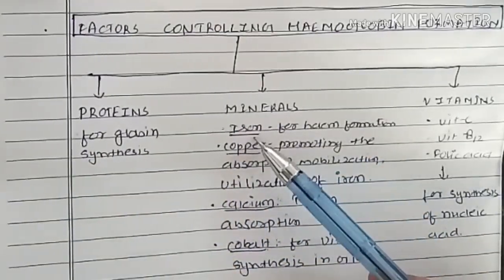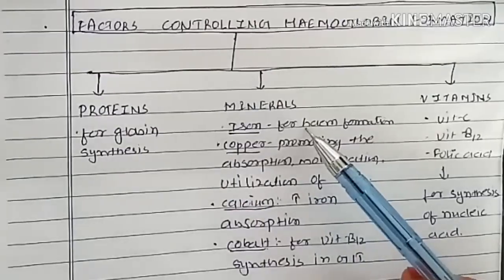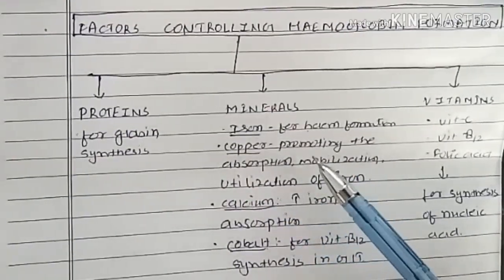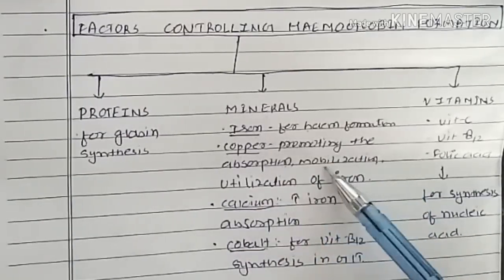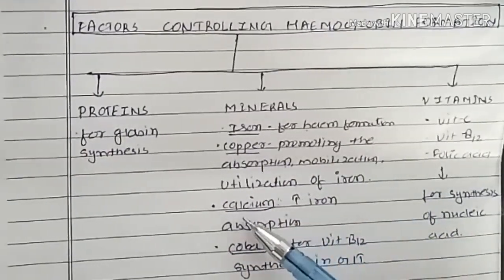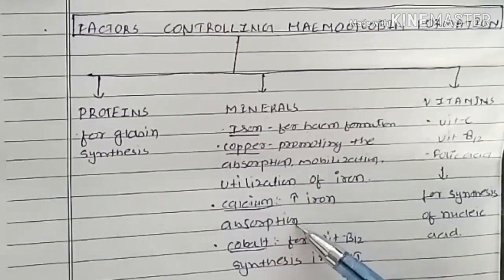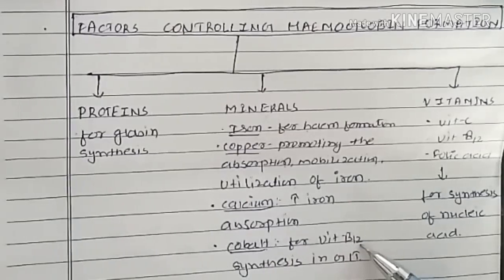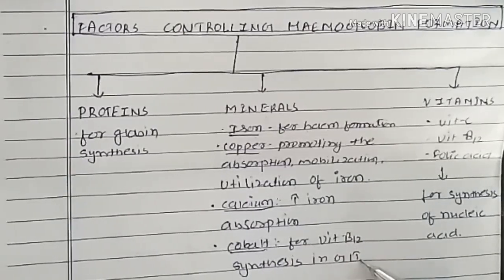Minerals like iron are required for heme formation. Copper is required as it promotes the absorption, mobilization, and utilization of iron. Calcium increases iron absorption, and cobalt is required for vitamin B12 synthesis in GI tract.